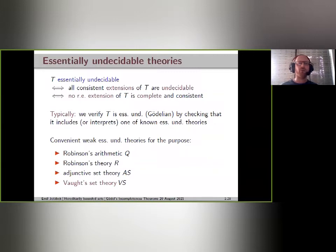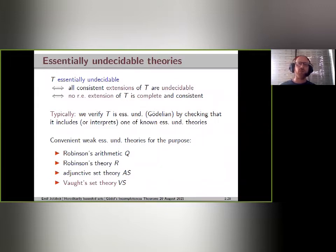Recall the basic notion of an essentially undecidable theory: a theory is essentially undecidable if all consistent extensions of the theory are undecidable, or to put it another way, no recursively axiomatizable extension of the theory is complete and consistent. In practice, if you want to verify that a theory is essentially undecidable, what we normally do is check that it includes or maybe interprets some well-known essentially undecidable basic theory.